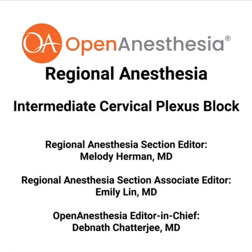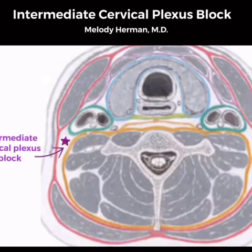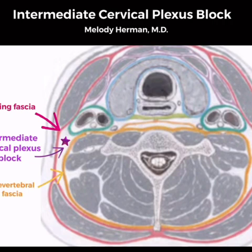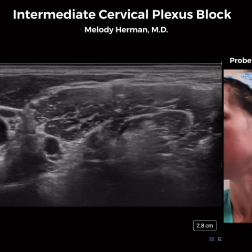I'm Dr. Melody Herman, the regional anesthesia section editor for Open Anesthesia. In this instructional video, we'll cover the intermediate cervical plexus block. The intermediate cervical plexus block consists of injecting local anesthetic deep to the investing fascia and superficial to the prevertebral fascia. We want to be at the C4 level when we perform this block.